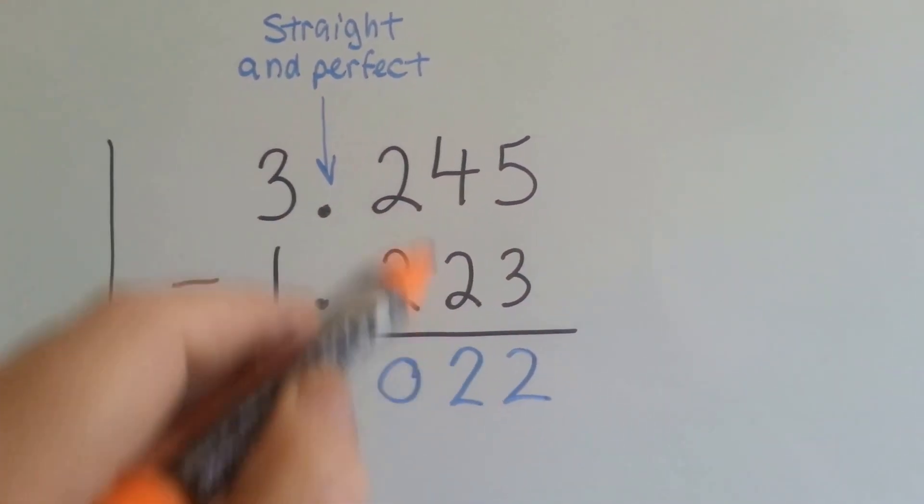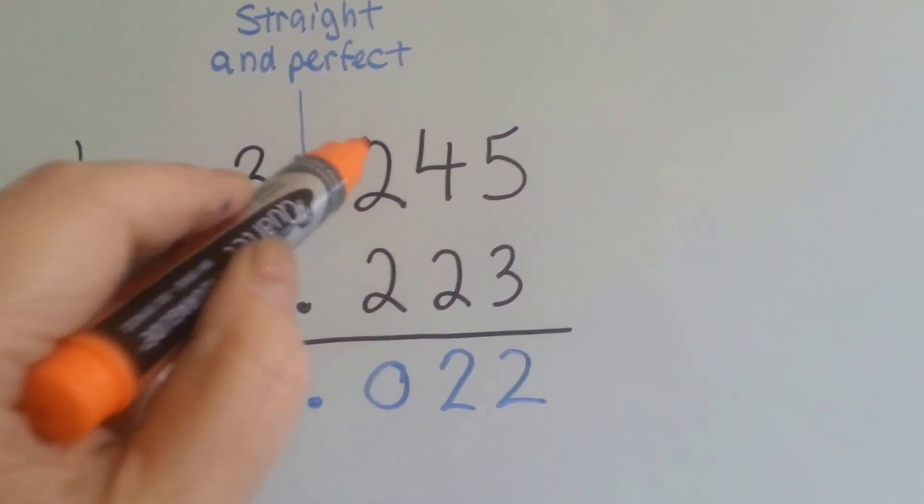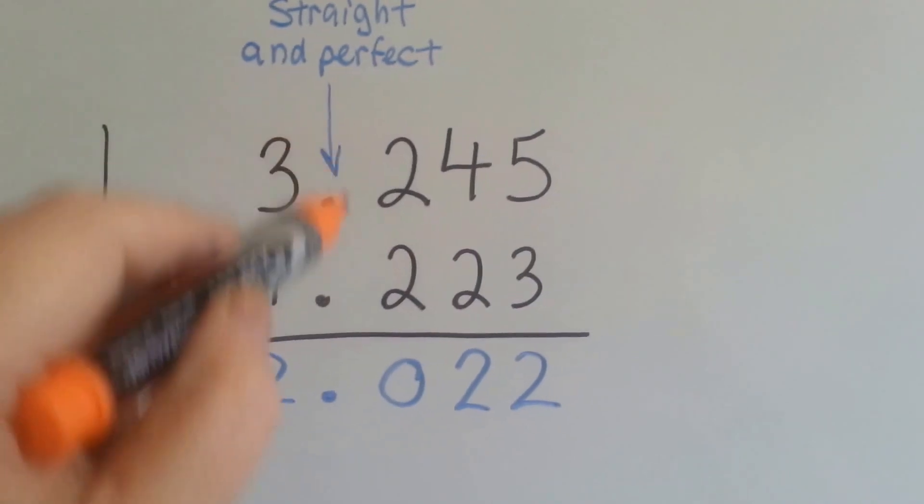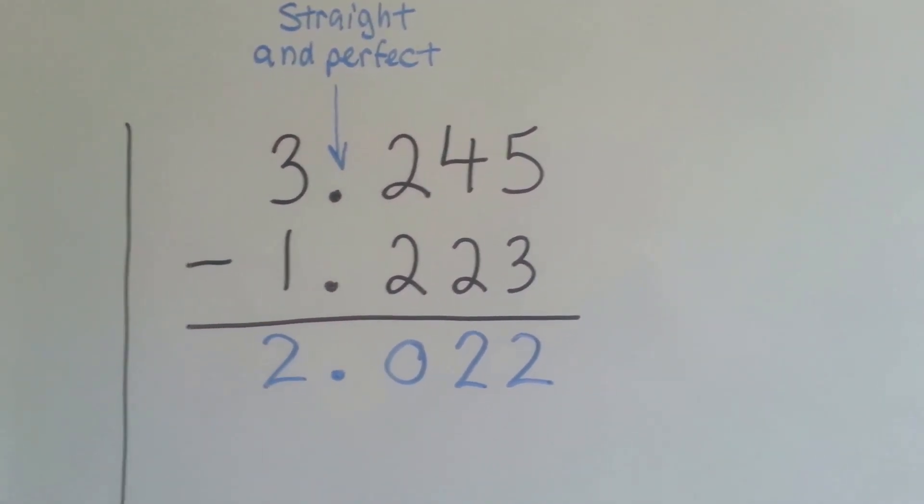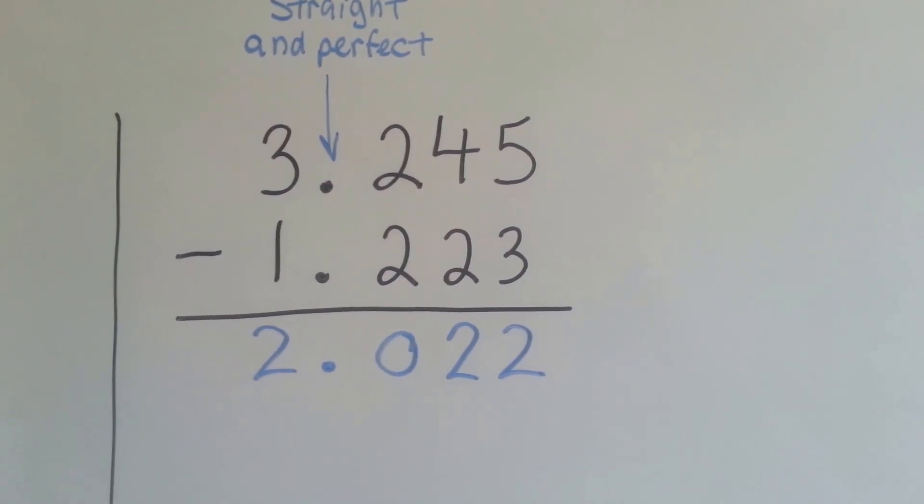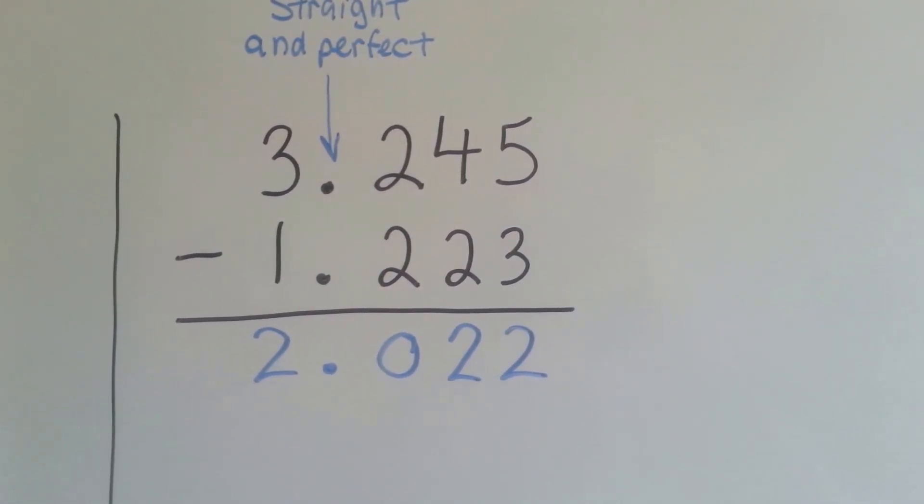5 take away 3 is 2. 4 take away 2 is 2. 2 take away 2 is 0. Straight, perfect, pretty decimals. 3 take away 1 is 2. And we've got our answer. 2 and 22 thousandths.